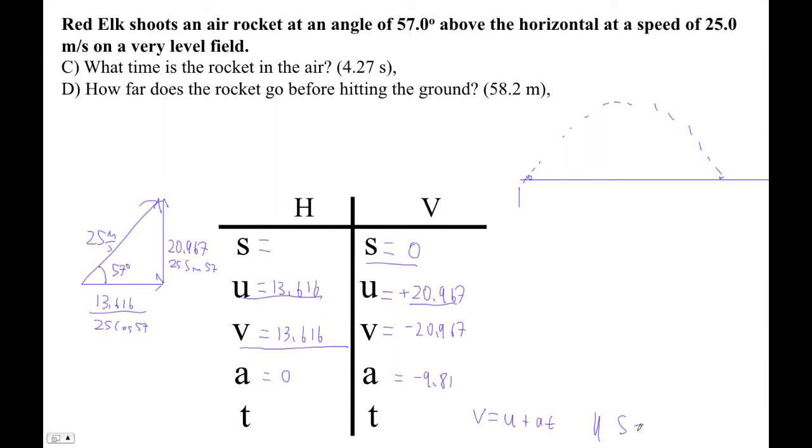But you could also use S equals UT plus one-half AT squared. Try it. Looks like it's not going to be easily solvable, but since S is zero, you can divide both sides by T.